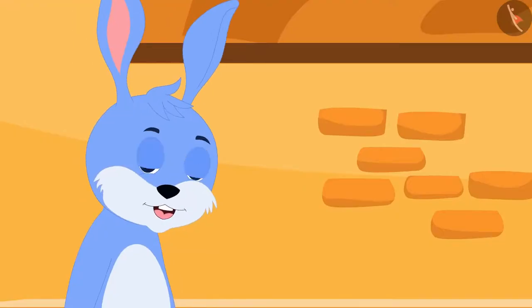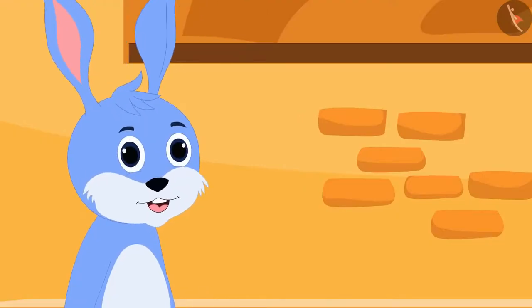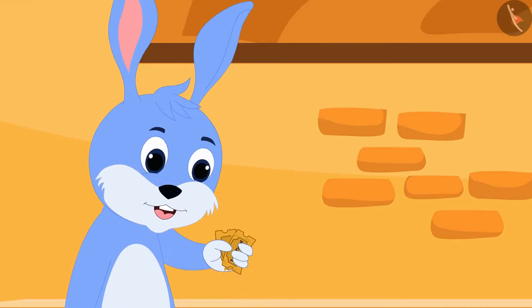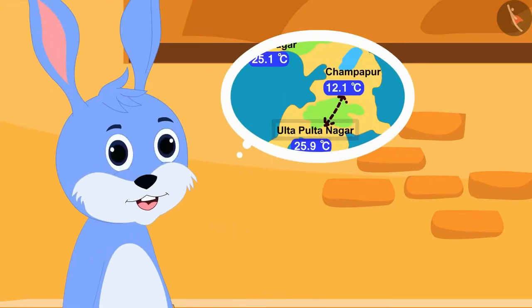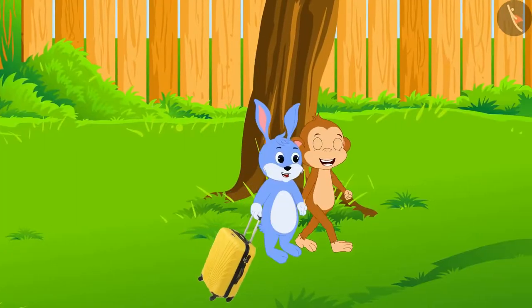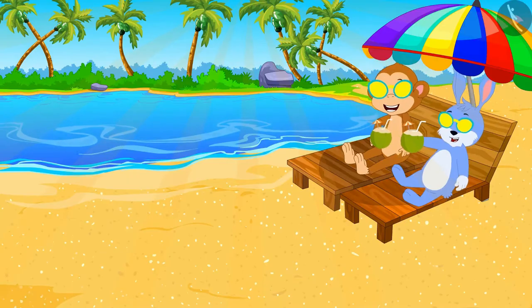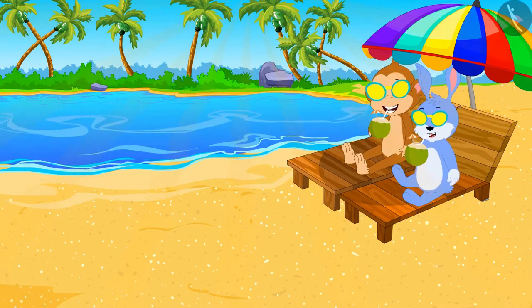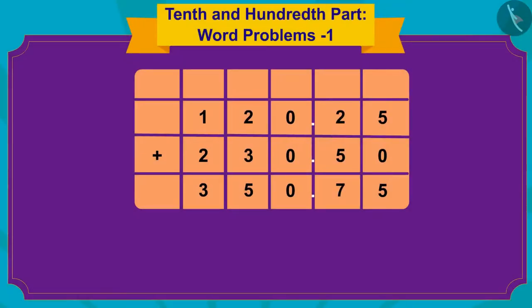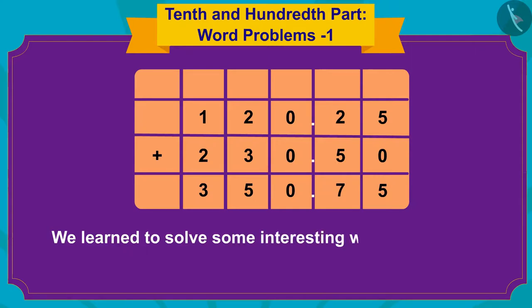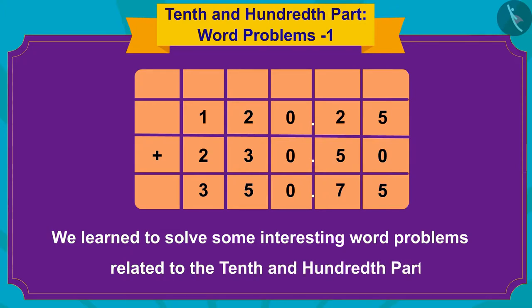Bunny got very excited. He bought two train tickets to go from Champapur to Ulta Pulta Nagar, and together Bunny and Babban reached Ulta Pulta Nagar for holidays. Children, in this video we learned to solve some interesting word problems related to the 10th and 100th part. In the next video, we will learn to solve some more interesting problems related to this.